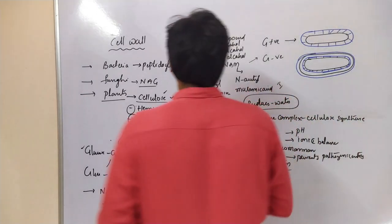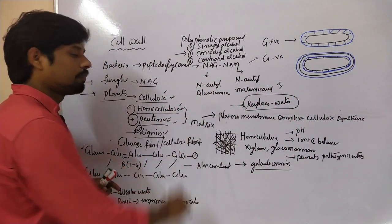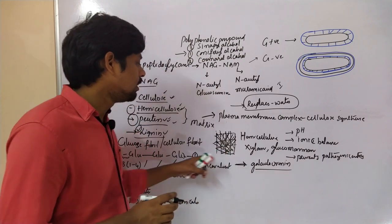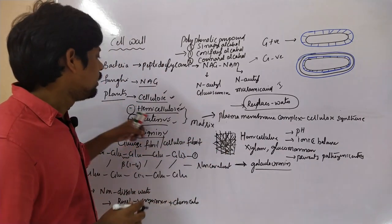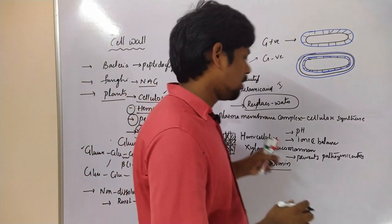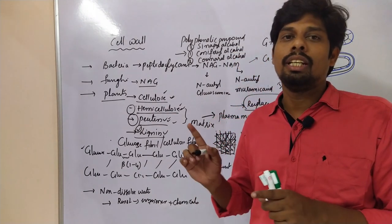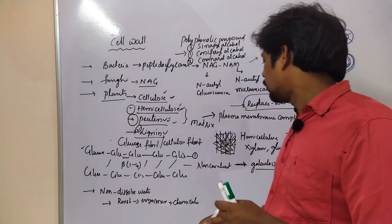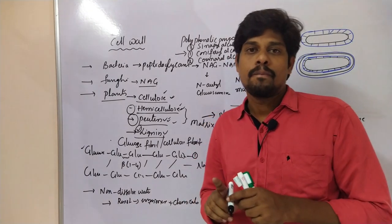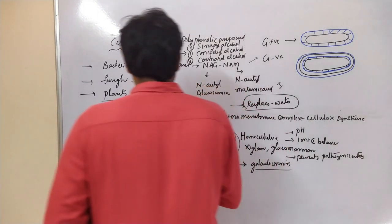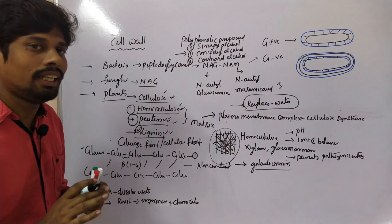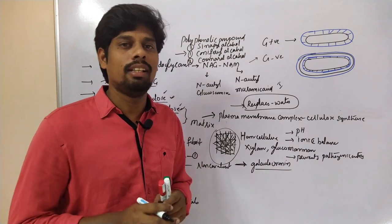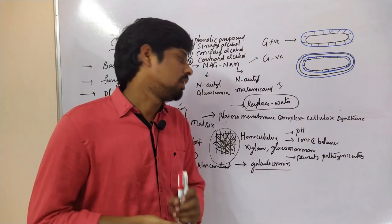Pectin forms a gel-like structure in the matrix of the cell wall. This gel-like structure of pectin is essential for the formation of pores in the cells, allowing transport of components from outside to inside through pores. If lignin is present in the cell wall, such a cell wall is very thick and rigid in nature.